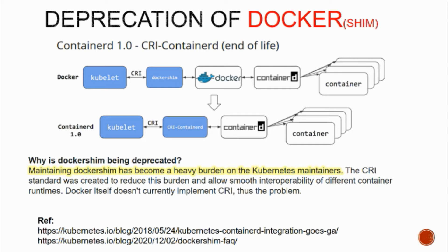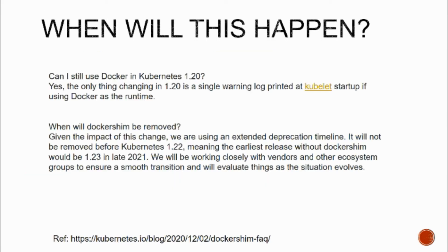Why is dockershim being deprecated? Dockershim is maintained by Kubernetes, not Docker. The Kubernetes team has specifically mentioned that maintaining dockershim has become a heavy burden on Kubernetes maintainers - they feel they are maintaining something extra just to support the whole Docker ecosystem. They would rather switch to just connecting directly to containerd, which already supports CRI standards. As for the timeline: in Kubernetes 1.20 they are just printing a log informing users that Docker runtime support will be removed. Docker shim will not be completely removed before Kubernetes 1.22.